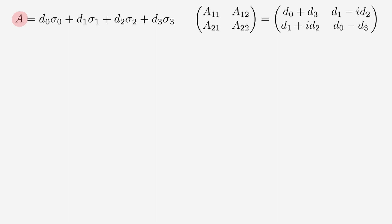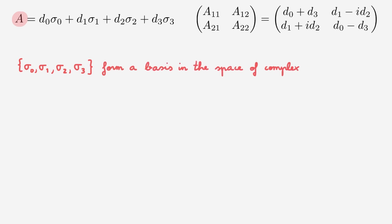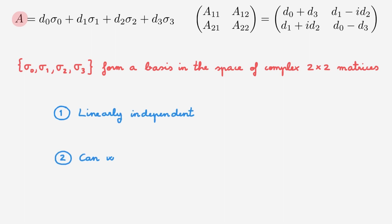So what we need to do is to show that it is indeed possible to write any complex 2x2 matrix as the linear combination of the identity and Pauli matrices. To put it another way, we need to show that the identity matrix together with the three Pauli matrices form a basis in the space of complex 2x2 matrices. To show this, we need to demonstrate two things: first, that these four matrices are linearly independent, and second, that we can write any complex 2x2 matrix as a linear combination of these four matrices.